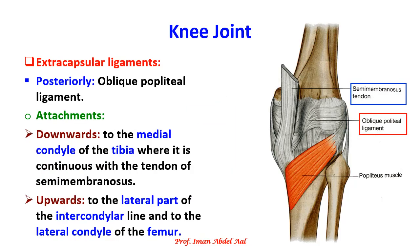The last extracapsular ligament is the oblique popliteal ligament. It is attached downwards to the medial condyle of the tibia and is continuous with the tendon of the semimembranosus muscle. Upwards, it is attached to the lateral part of the intercondylar line and to the lateral condyle of the femur. By this, we have finished the four extracapsular ligaments: the patellar ligament, the tibial collateral ligament, the fibular collateral ligament, and the oblique popliteal ligament.